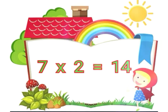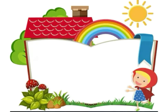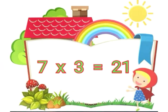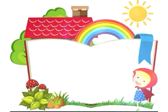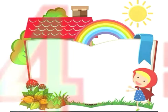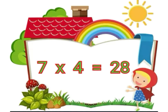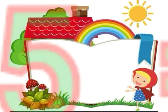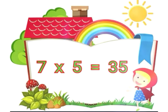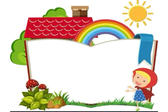7 1's are 7. 7 2's are 14. 7 3's are 21. 7 4's are 28. 7 5's are 35.